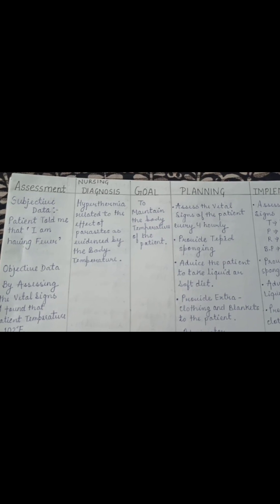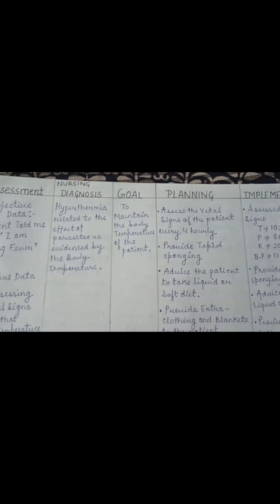The first nursing care plan is for hyperthermia related to the effect of parasites, as evidenced by body temperature. The goal is to reduce the patient's temperature. Interventions include assessing body temperature, performing tepid sponging, avoiding cold sponging, encouraging fluid intake, providing extra blankets, and administering antipyretics as prescribed.